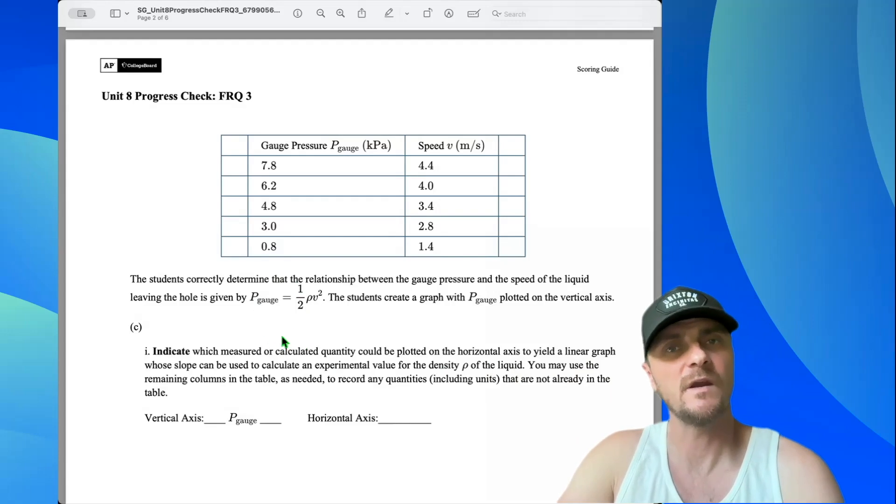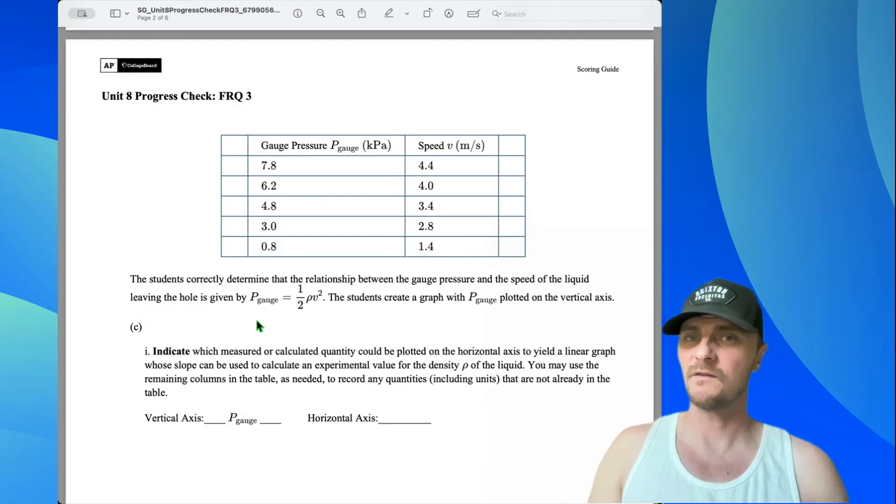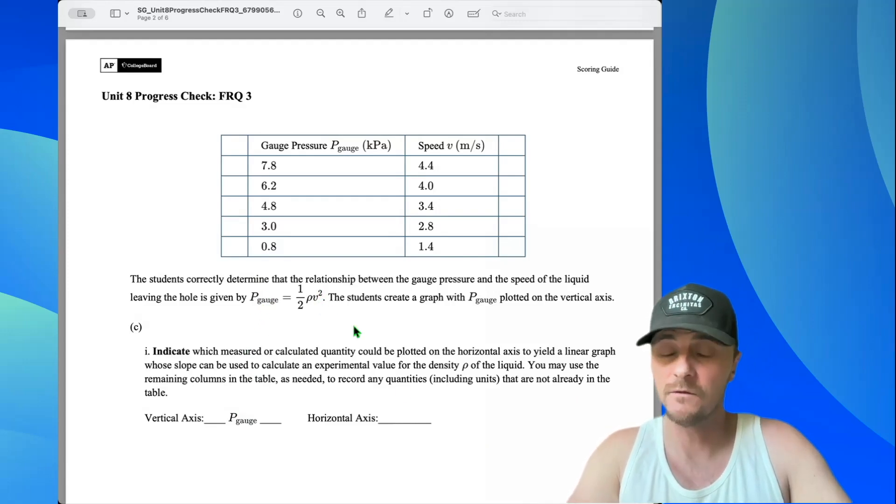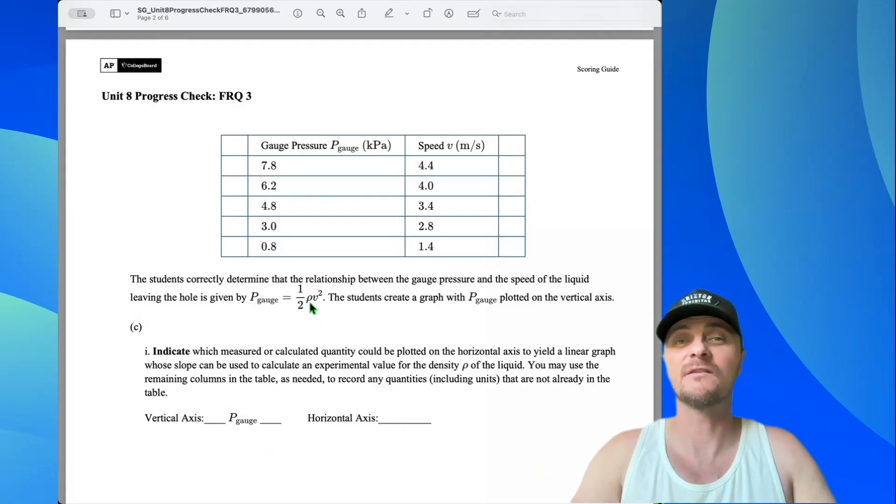What are we going to put on the horizontal axis knowing that P gauge is on the vertical axis so that I get a slope, and from that slope it's either going to give me the density of the liquid or give me some expression from which I can calculate the density of the liquid. They gave us the equation right here. P gauge is on the y-axis, one half the density of the liquid can be our slope, and v squared can be our horizontal axis. Instead we could say v squared over 2 could go on the horizontal axis, and then the slope would be directly equal to the density of the liquid.